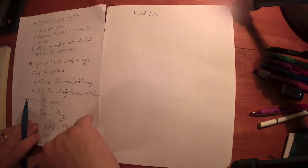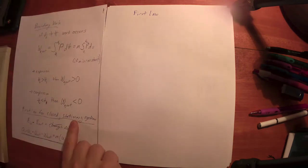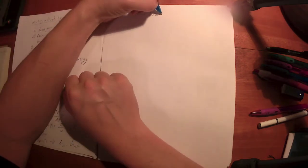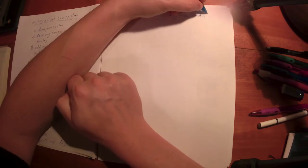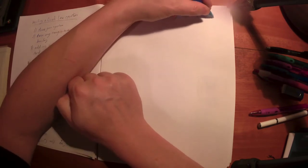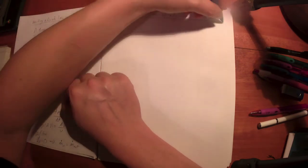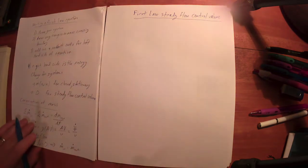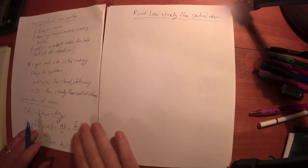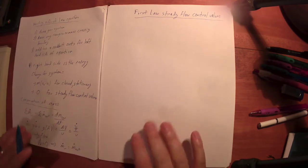The whole purpose of this exam is to test you on your ability to simplify the first law to any closed stationary system or simplify the first law to any steady flow control volume. How do you study for the exam? Find problems where it's a closed stationary system or steady flow control volume, go through this procedure and write the first law expression, and then check that against some solution manually to see if you got that right.